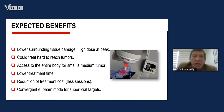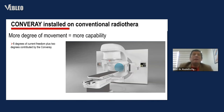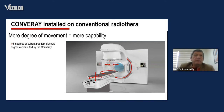The last session covers convergent electron beam modes for superficial tumors. Conver-ray, integrated with radiotherapy equipment, offers more degrees of freedom and more capability — six degrees of current freedom, plus two additional degrees contributed by the Conver-ray.